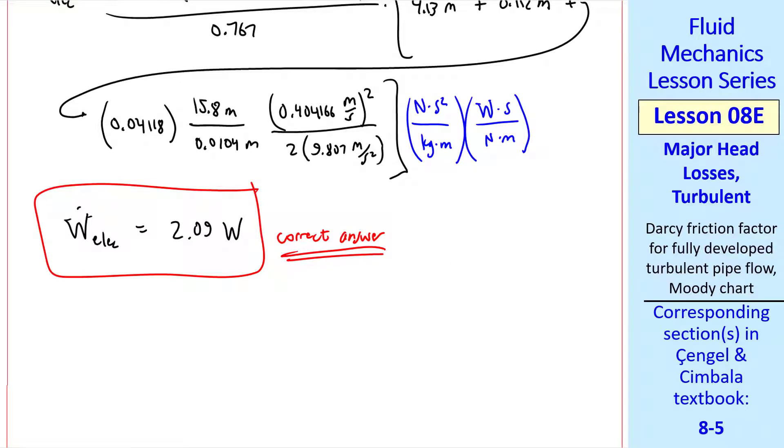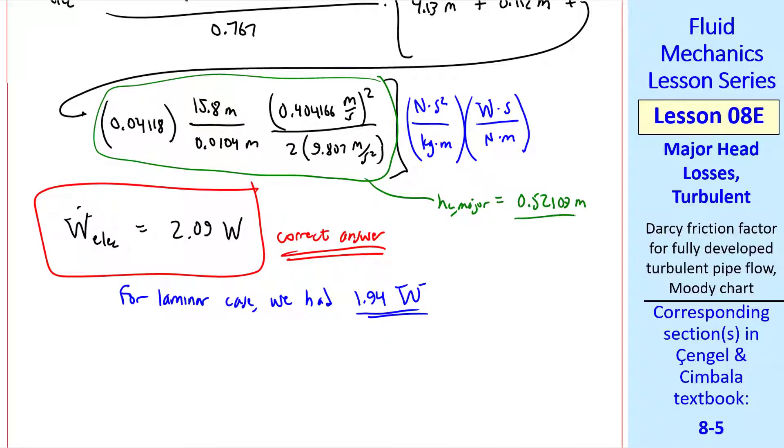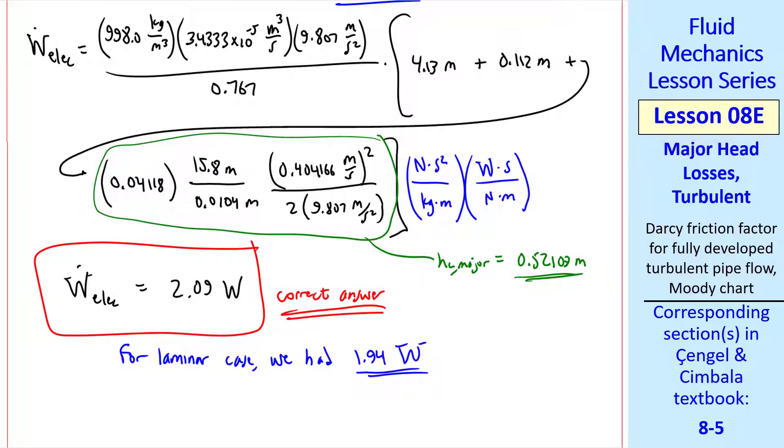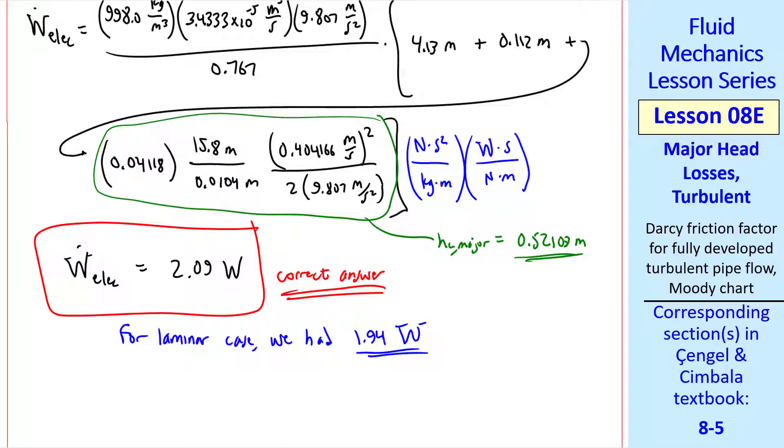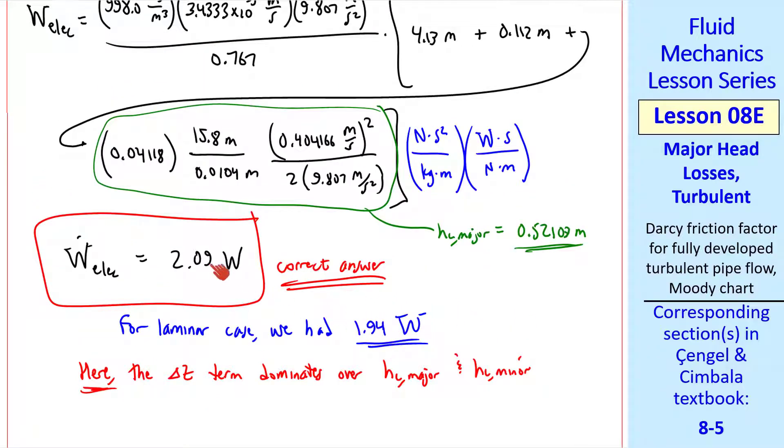Before I go further I just want to compare with the previous F which we had assumed incorrectly was 64 over Reynolds number for laminar flow. Plugging in our Reynolds number we get F is 0.01529. We see that this is quite different from F for turbulent flow. Now we have everything we need for this equation since the only thing lacking was F. So let's plug in the numbers. Rho, V dot, G, pump motor efficiency, elevation difference, minor head losses, and then major head loss which is our F times L over D times V squared over 2 G, close bracket, and then 2 unity conversion ratios noting that a watt is a Newton meter per second. Plugging all this in gives us 2.09 watts which is now the correct answer.